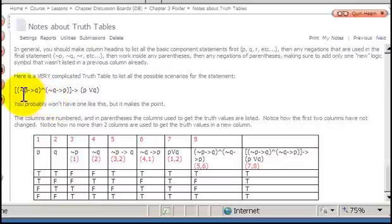Here is the complicated statement. It has several brackets. Within it we have negation of p implies q and negation of q implies p, and then that whole statement implies p or q.